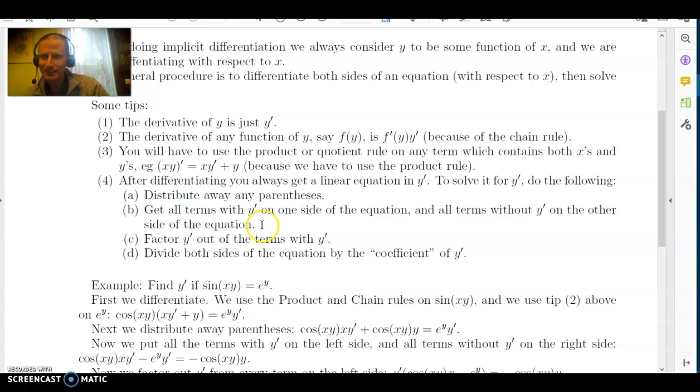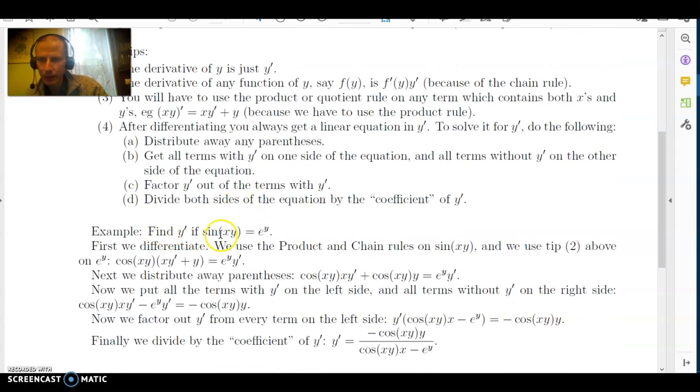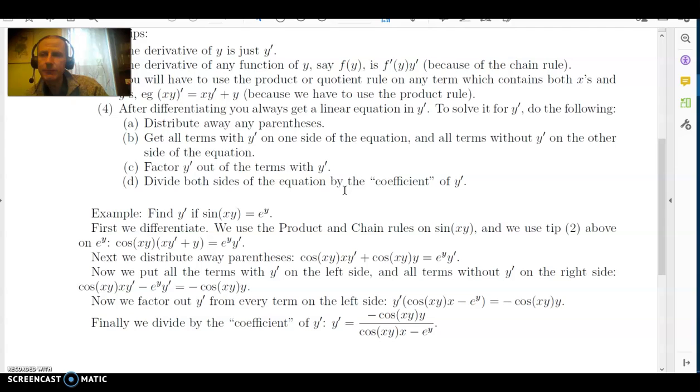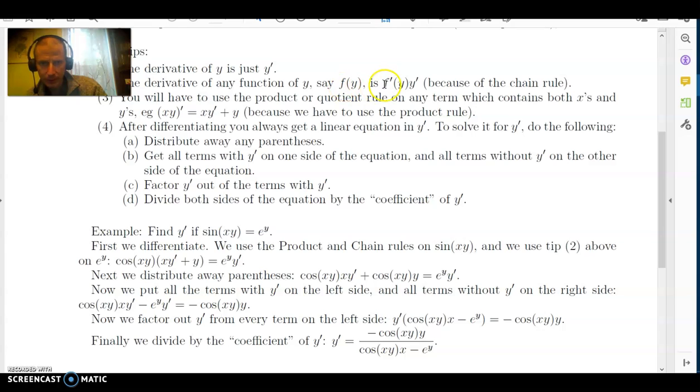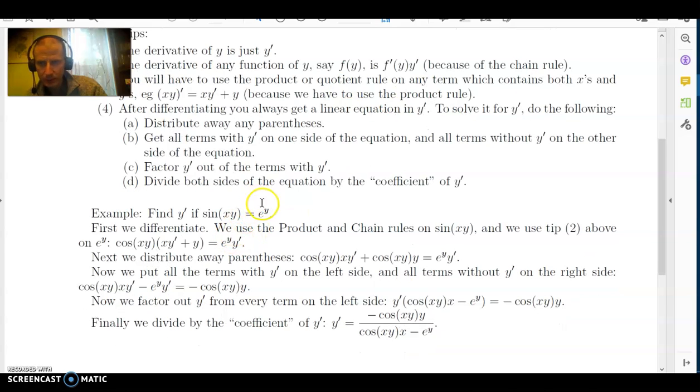So we're going to illustrate this with an example. We're going to find y prime if we know that sine of xy is equal to e to the y. So the first step is to differentiate both sides of the equation. So on the sine of xy, we're going to have to use the product and chain rules. So the derivative of sine is cosine, so we get a cosine of xy. But then by the chain rule, we have to multiply it by the derivative of what was inside the sine, which is xy. And as we just noted above, the derivative of xy is xy prime plus y, all in parentheses. Now, by tip 2, where the derivative of f of y is f prime of y times y prime, we get that the derivative of e to the y is e to the y times y prime, because the derivative of e to the x is e to the x.